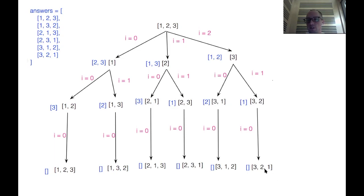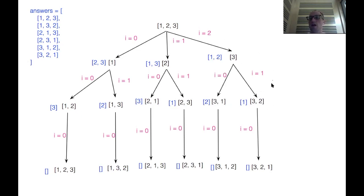We return from the function call where we had an empty array of numbers, back up through the call with [3,2], back to the call with just [3], and finally all the way back to the top of our tree where we have [1,2,3] and i equals two — we can't iterate anymore, so we finally return from this original call with our complete answers array.